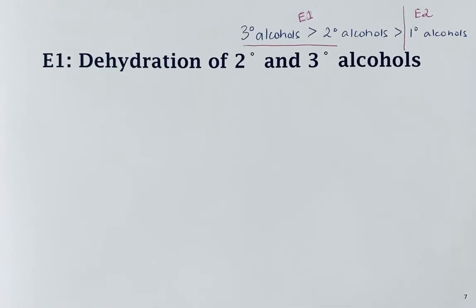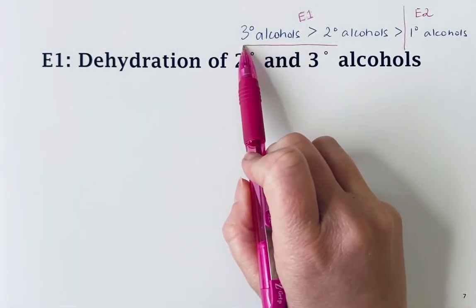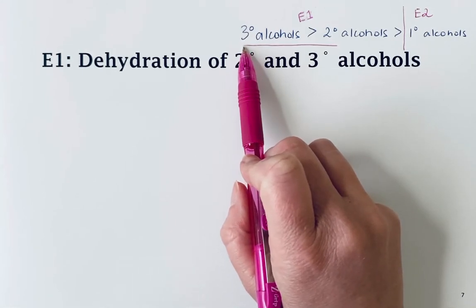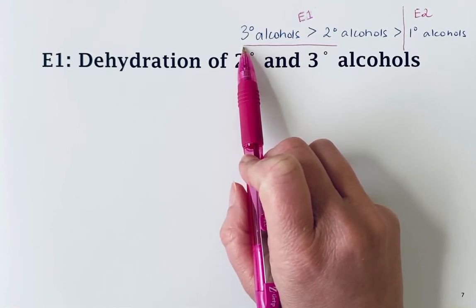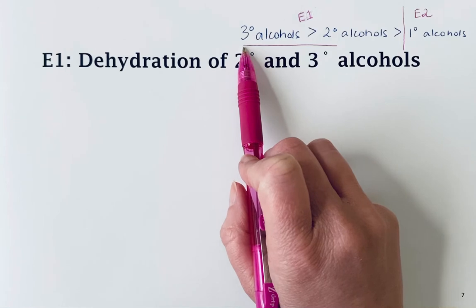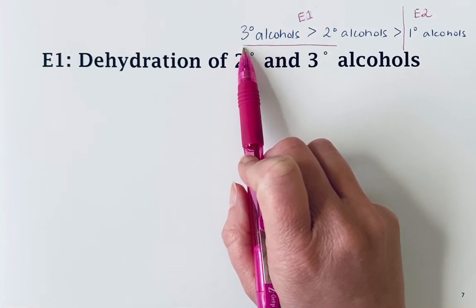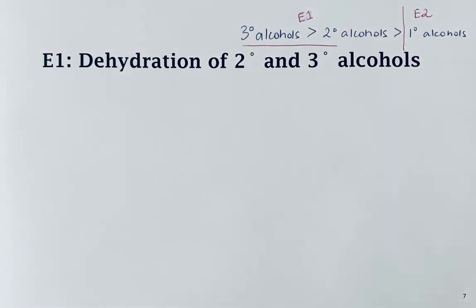Secondary and tertiary alcohols can be dehydrated—that's the elimination of water to form alkenes—if treated with a strong acid and heat. Much like reactions with alkyl halides, the order of reactivity for elimination reactions depends on the stability of the alkene formed. The more substituted the alkene, the lower the transition state energy and the faster the reaction.